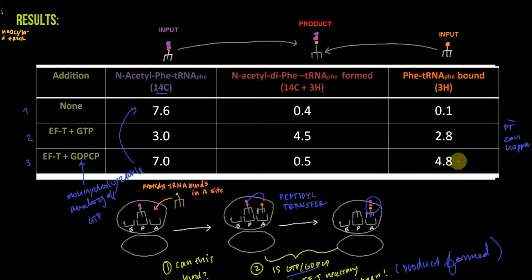Now, you can't conclude what I'm about to say next from this data, but this is still interesting. GTP or GDPCP is necessary to get Phe-tRNA binding, but EF-T alone, or EF-T and GDP, would not result in this binding. GTP or GDPCP is necessary, but you can't say that from the data. All you can say is that GTP hydrolysis is not necessary for this step, for this to bind.